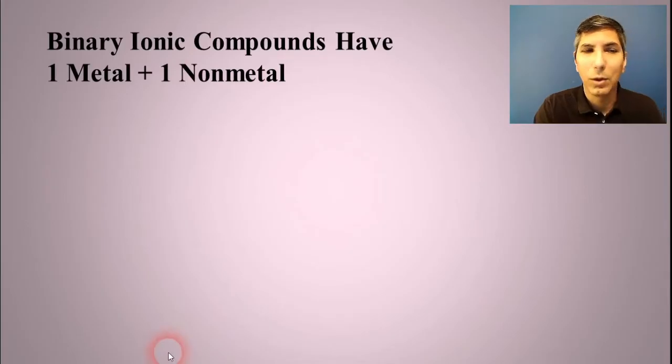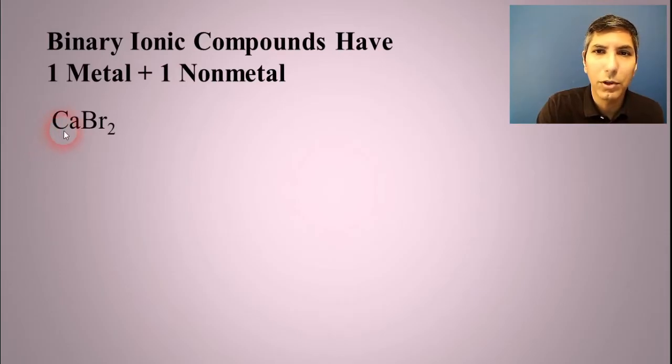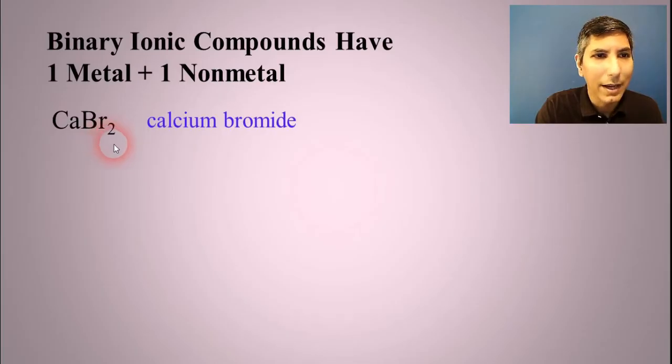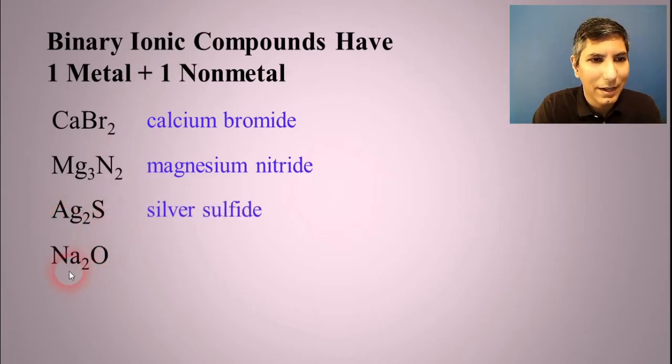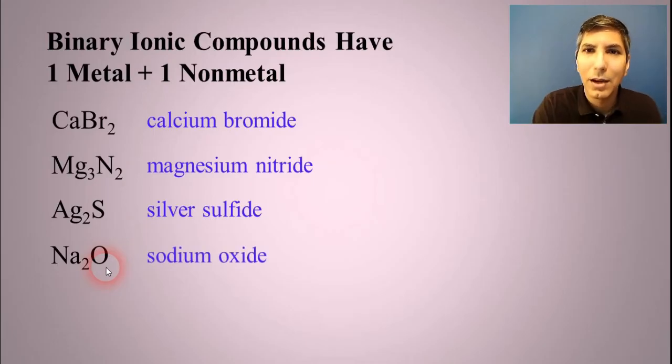Back to ionic compounds. Once again, one metal, one nonmetal. So if you see these, just hopefully you can go through these very quickly and realize it's calcium bromide. And once again, the goal is to get very good at these so that you just look at the names or look at the formulas and you see that name in your mind, or you can say that name in your mind very quickly. Same thing here, magnesium nitride. Try to do that quickly. Silver sulfide. Sodium oxide. If you know the names of the elements like we had in our previous video, this should be very quick for you there.